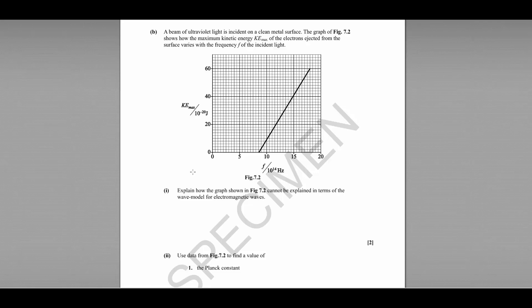And part B is a question about the photoelectric effect. We've got a beam of ultraviolet light incident on a clean metal surface. The graph shows us how the maximum kinetic energy of the electrons ejected from the surface varies with the frequency of the incident light. So we should explain how this graph cannot be explained in terms of the wave model for electromagnetic waves.